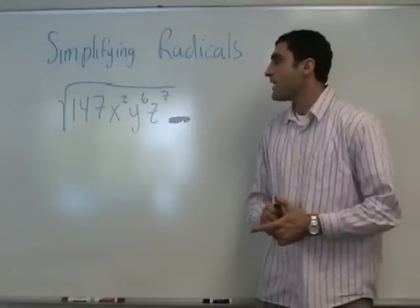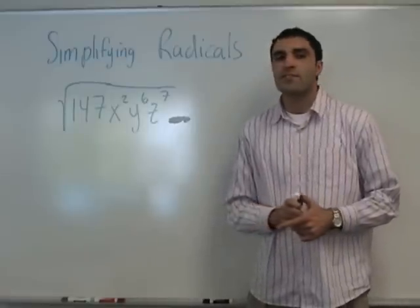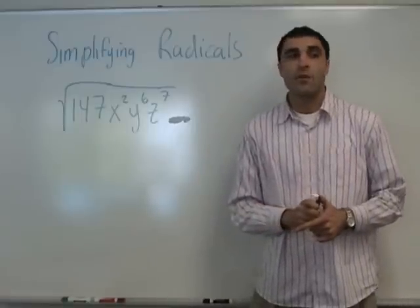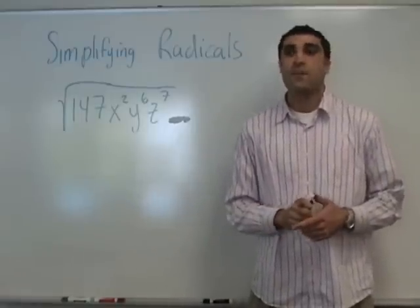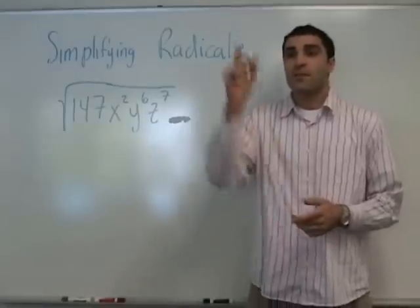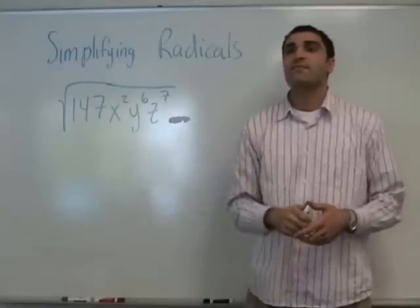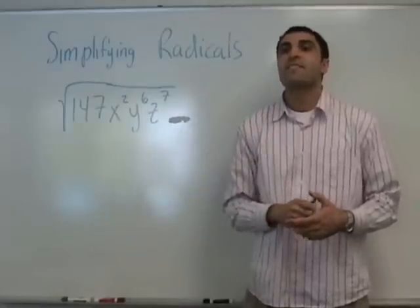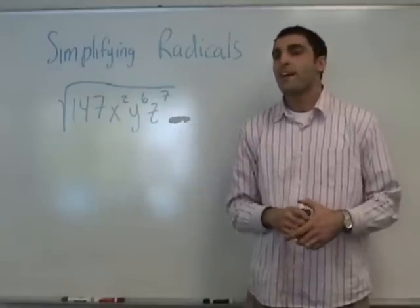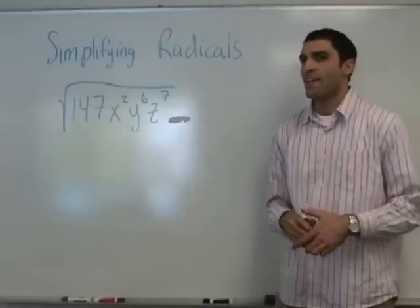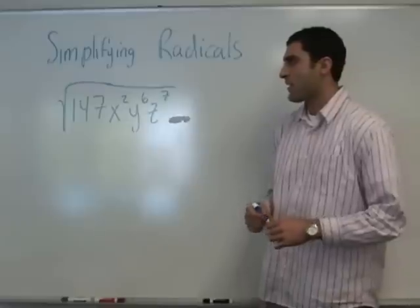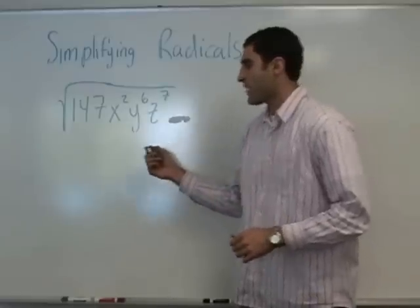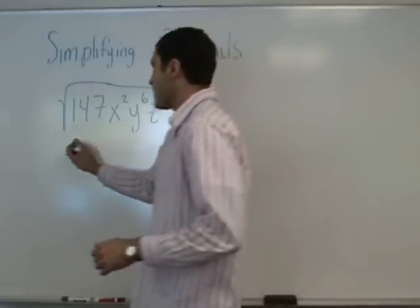Are there any factors of 147 in which one of them is a perfect square root? 49 times 3. There you go. It's not visibly apparent, but it's there. 49 times 3.